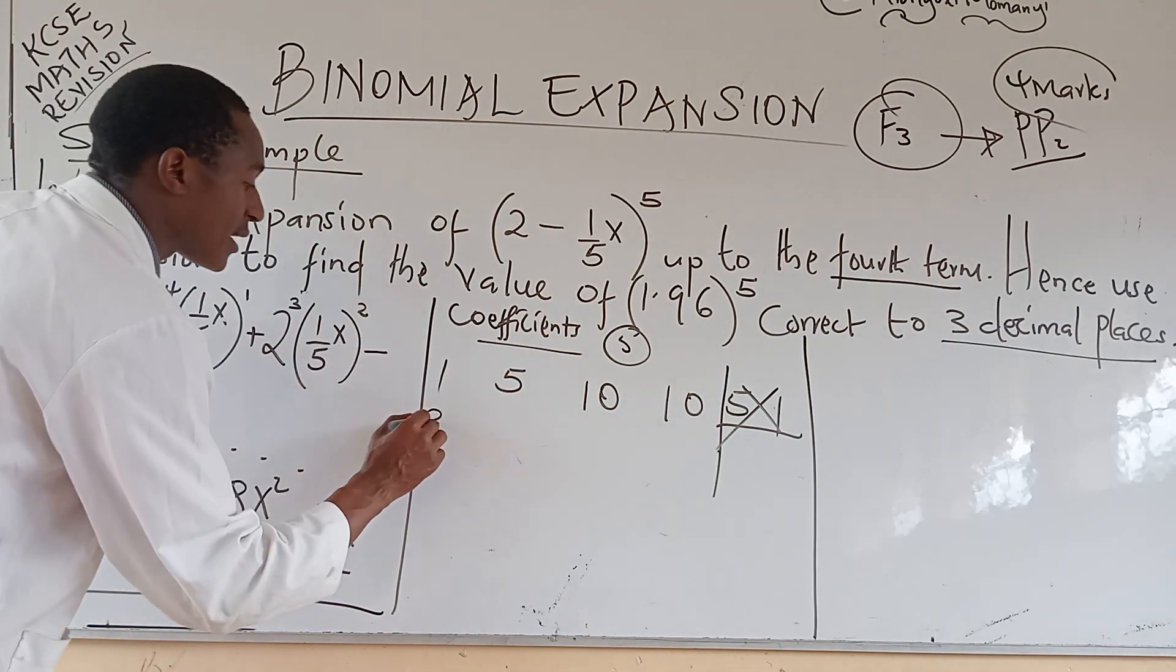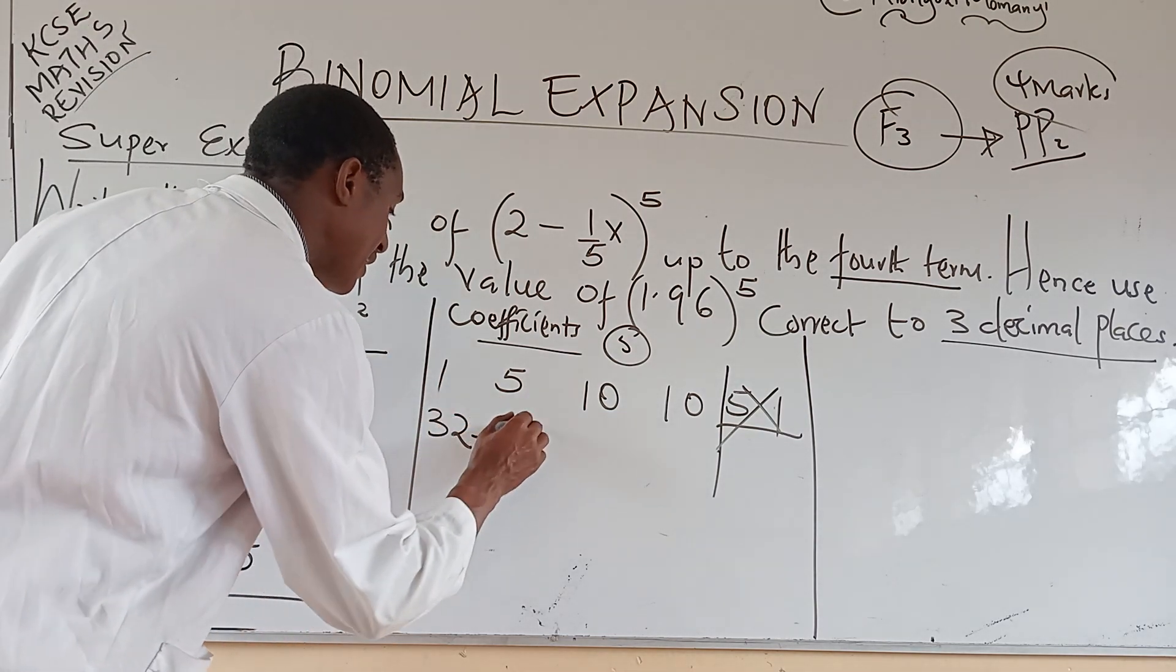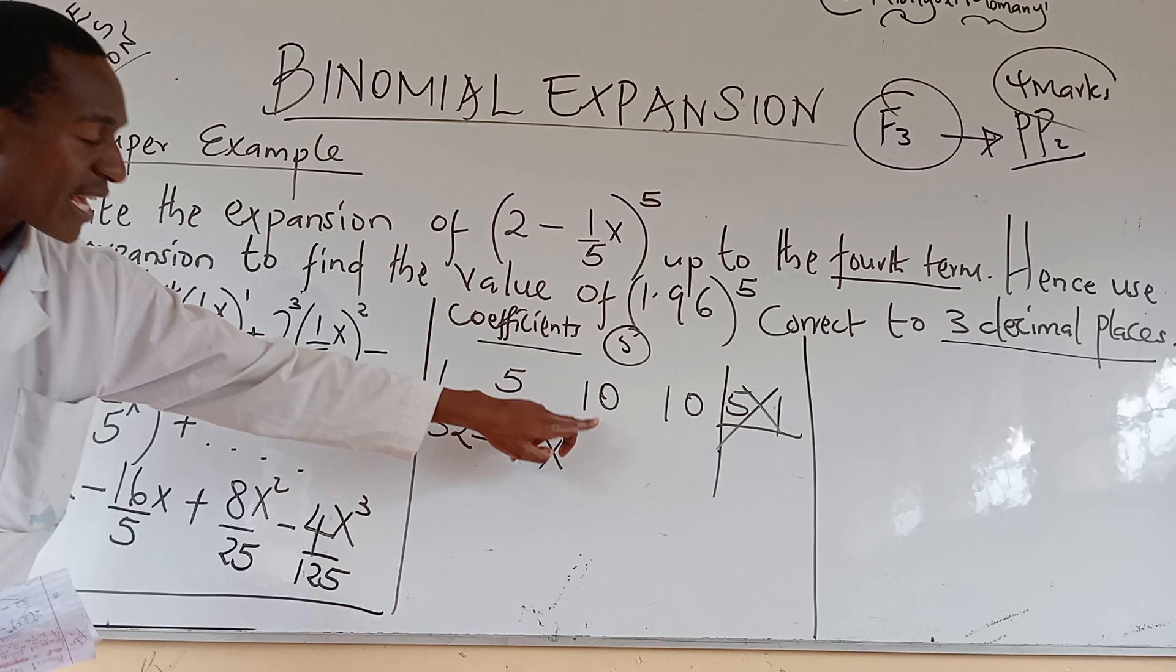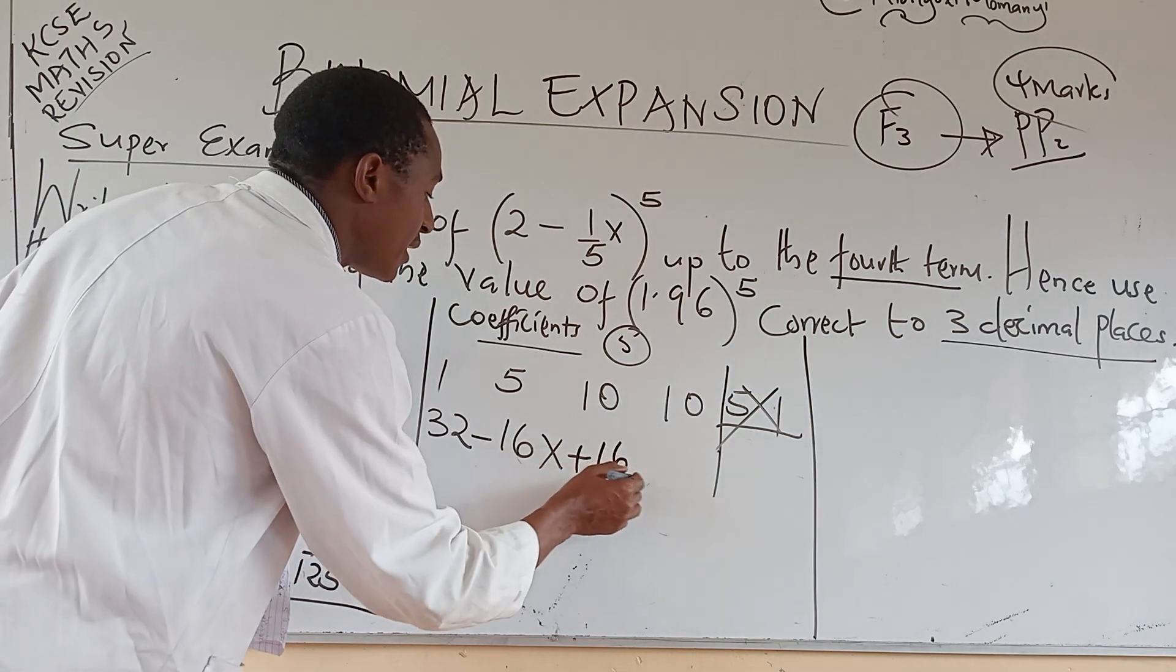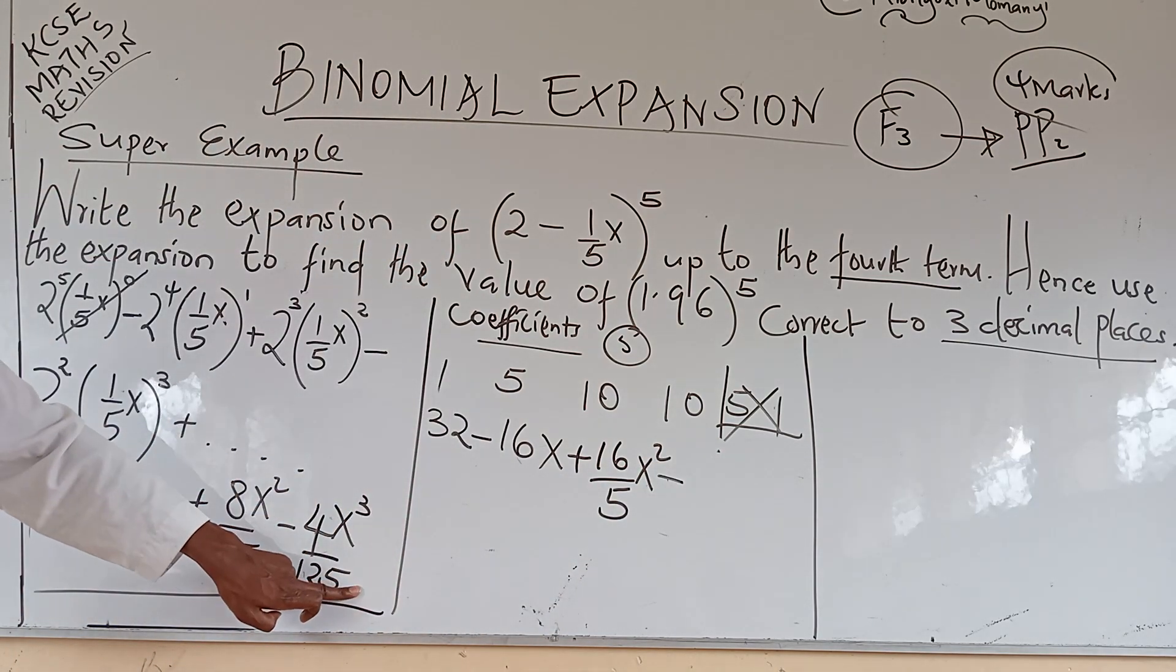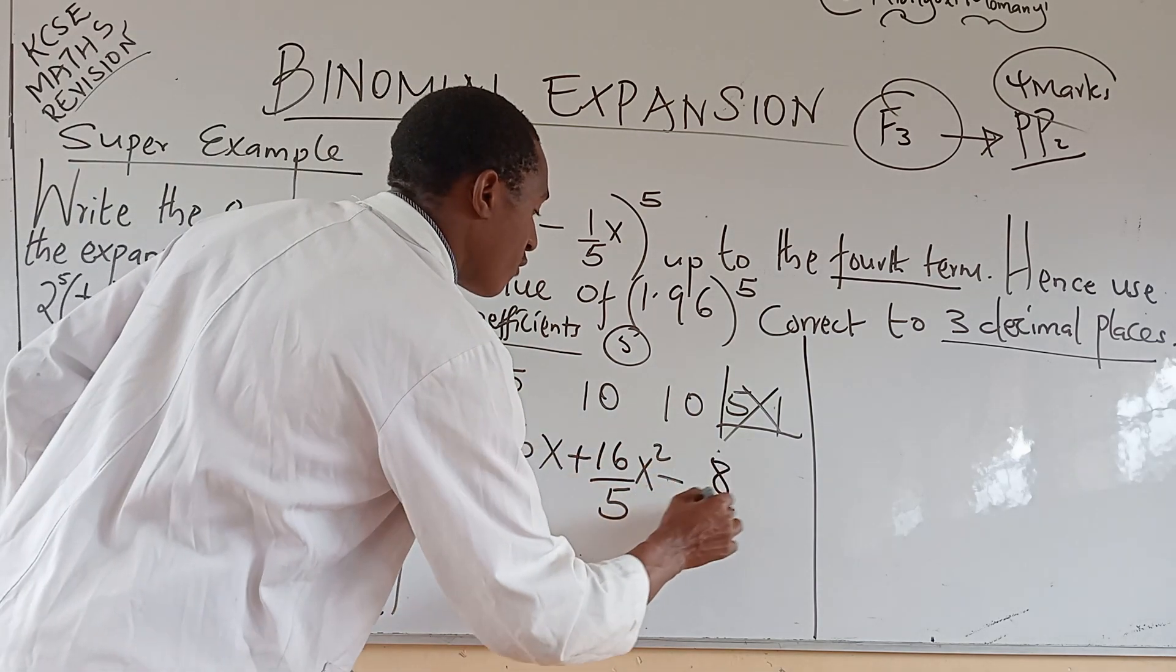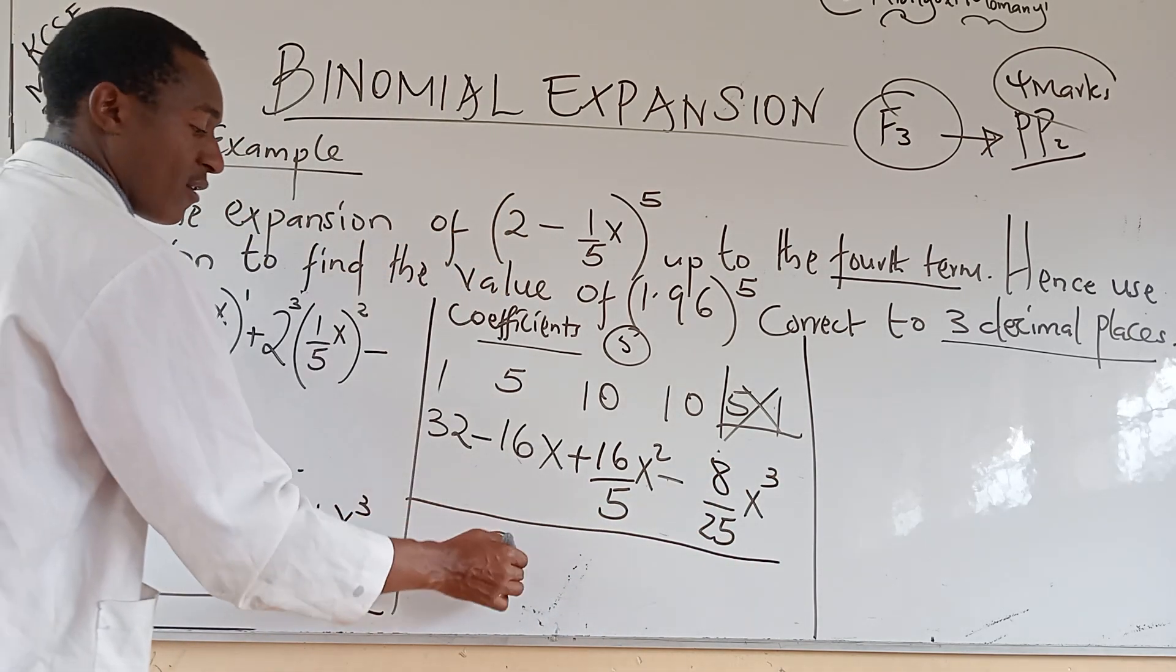Thirty-two times one is thirty-two. Sixteen over five times five is minus sixteen x. Then, eight over twenty-five times ten is like eighty over twenty-five, which is sixteen over five. Plus sixteen over five, and then there is x squared. Then, minus four over one twenty-five times ten. Use your calculator well. You will get eight over twenty-five x cubic. At this point, you qualify for two marks.